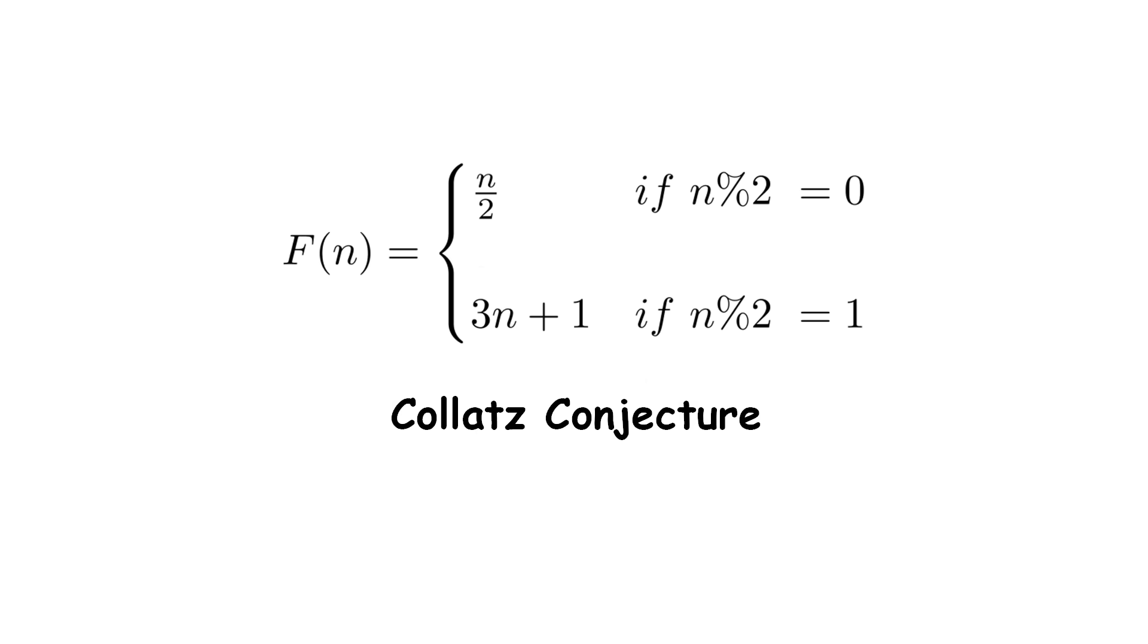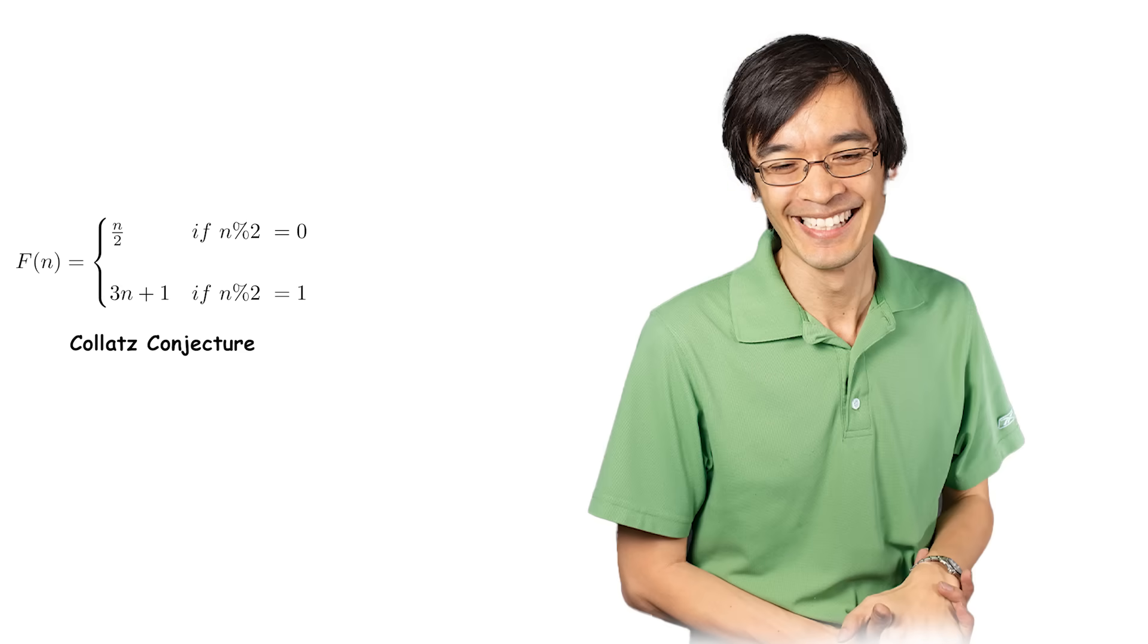Collatz conjecture. In September 2019, news broke regarding progress on this 82-year-old question, thanks to genius mathematician Terence Tao. And while the story of Tao's breakthrough is promising, the problem isn't fully solved yet.